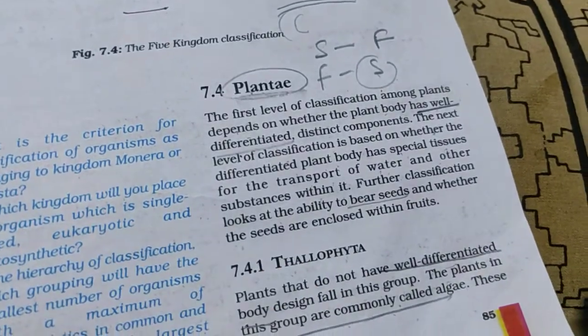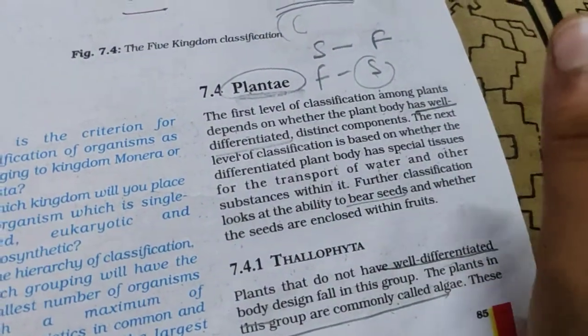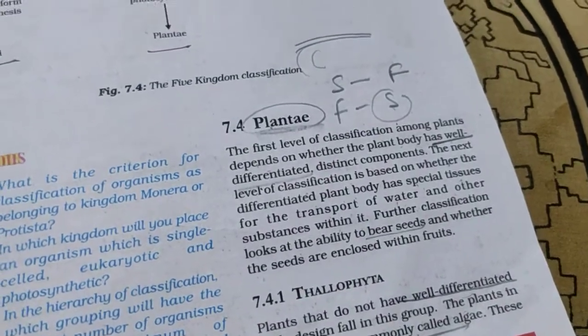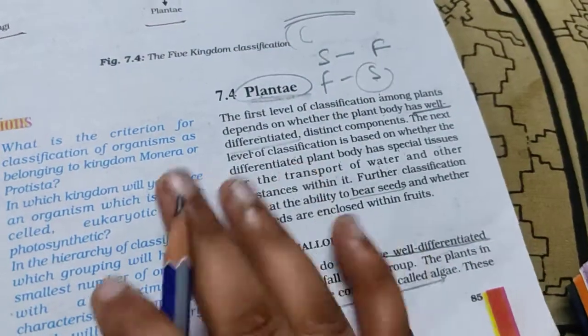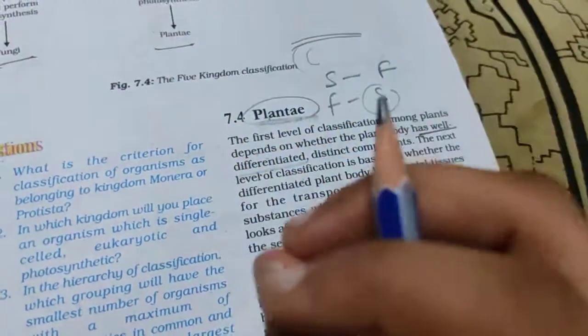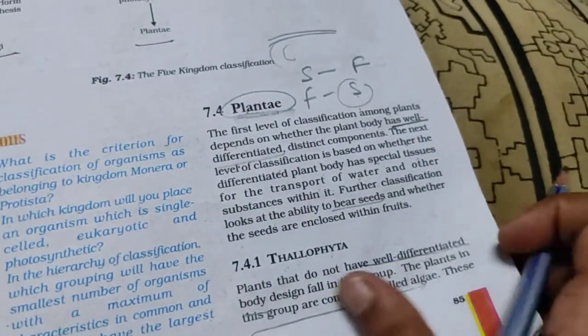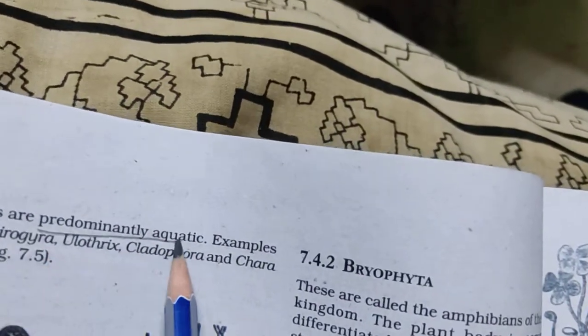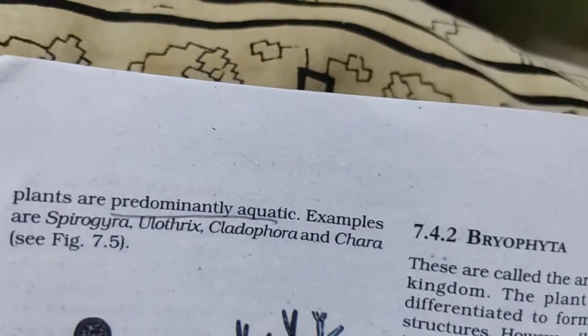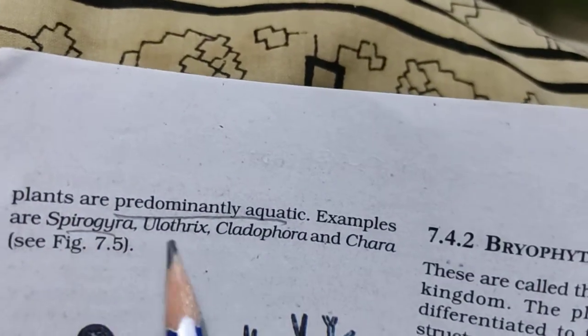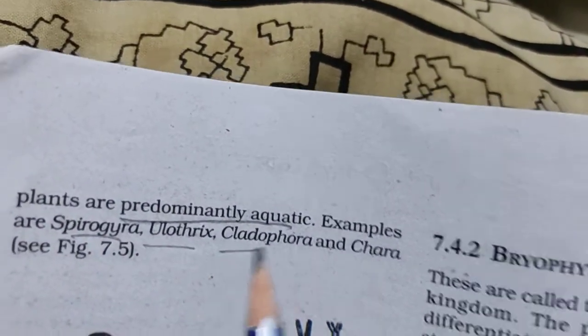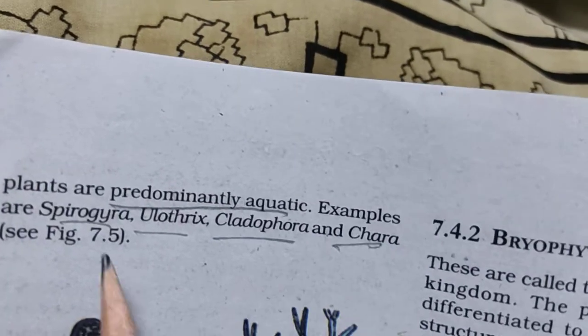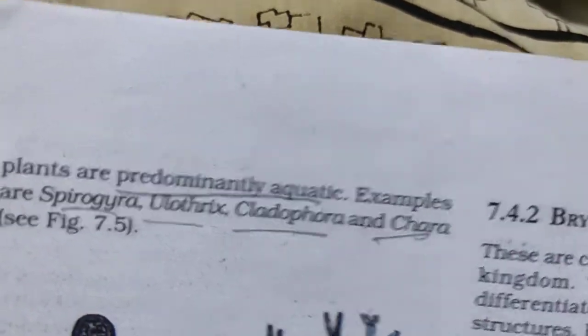Thallophyta plants do not have proper body design - no proper leaves, stem, or roots. These plants are predominantly aquatic. Examples include Spirogyra, Ulothrix, Cladophora, and Chara. These are all algae.